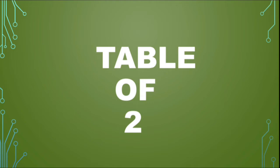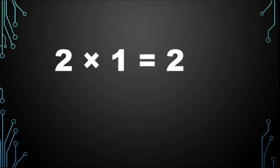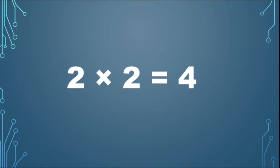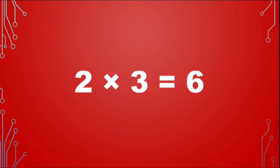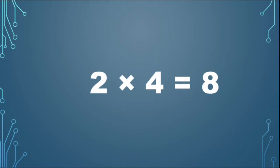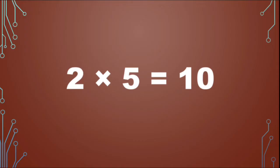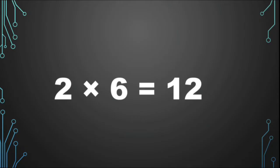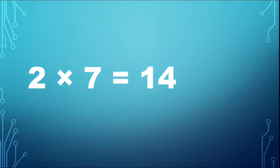Table of 2. 2 1s are 2, 2 2s are 4, 2 3s are 6, 2 4s are 8, 2 5s are 10, 2 6s are 12, 2 7s are 14.